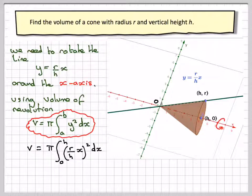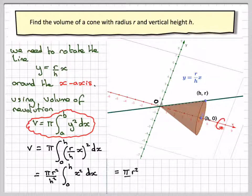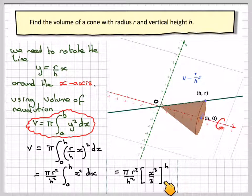So this is going to give me r squared over h squared. These are just constants, so we can take them out of the integral sign. So we've got pi r squared over h squared, the integral from 0 to h of x squared dx. If we integrate x squared, we get x cubed over 3.